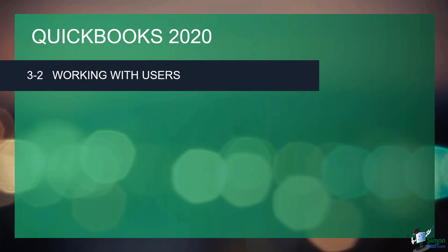We are working in Module 3, talking about different ways to customize the QuickBooks environment. We've gone through preferences in section 1, and now we're on section 2 working with users. If you open the company file without users set up, you can start working right away. But if you set up users, you'll have to type in a username and password. It's to your advantage to set up users for each person using your company file, because you can track changes via a report called the audit trail. You can also limit employee access to certain areas in QuickBooks.